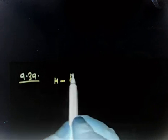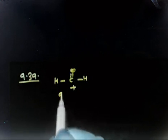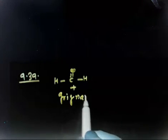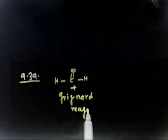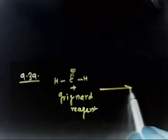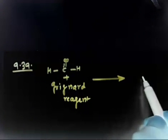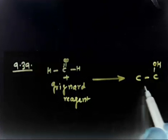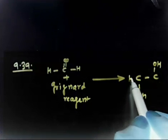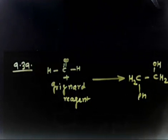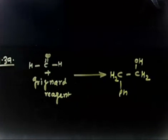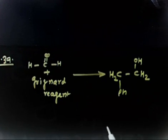Let us discuss the next question. This is a conversion to 2-phenyl ethanol by addition of formaldehyde and a suitable Grignard reagent. You have to use formaldehyde (HCHO) plus some Grignard reagent. Using these two, you have to finally prepare 2-phenyl ethanol — so you have the ethanol with a phenyl group, CH₂, and CH₂. You have to prepare this compound using Grignard reagent plus formaldehyde.